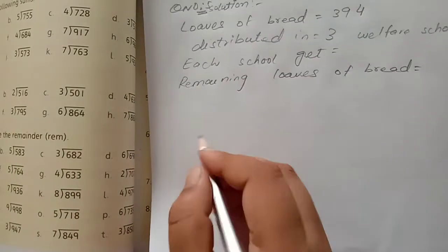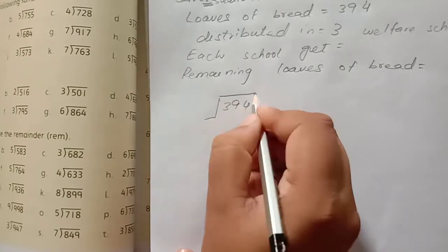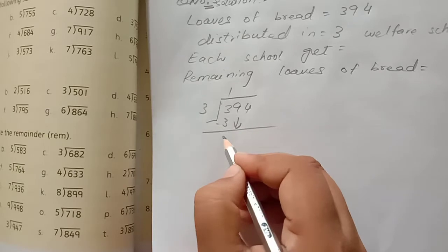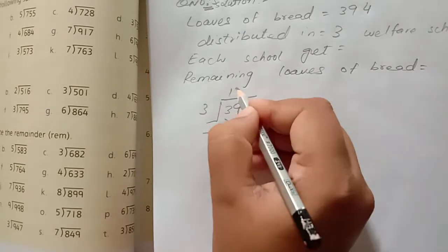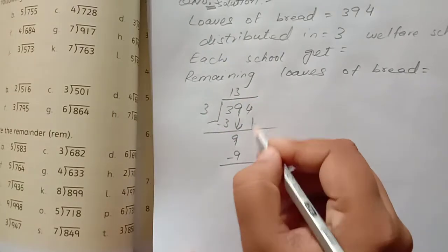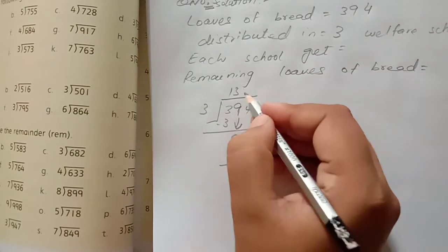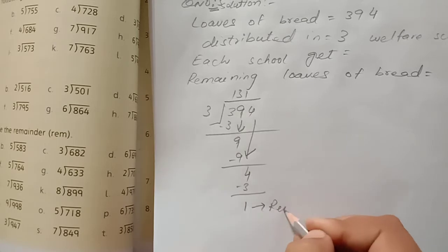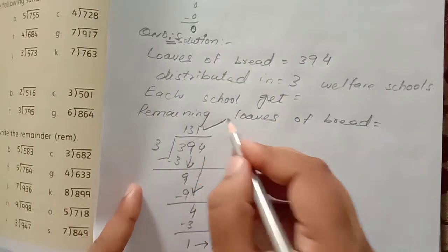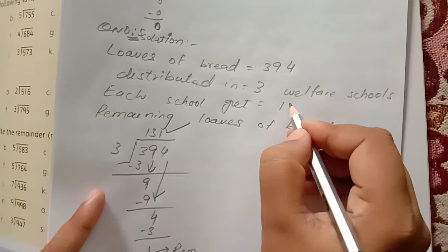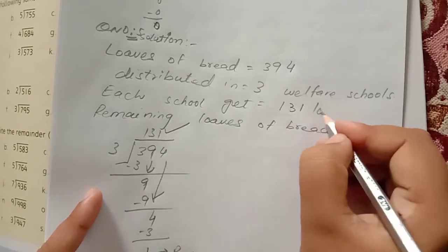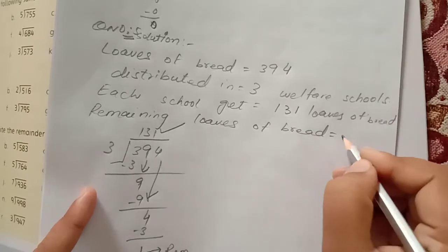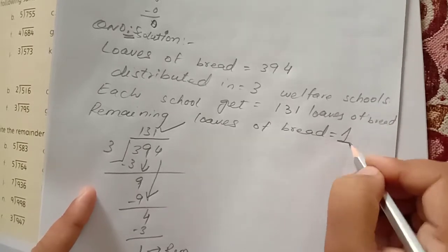How we will know? We will divide. 394 divided by 3. 3 into 3 is 1, minus 3, 0. 3 into 9 is 3, minus 9, 0. 3 into 4 is 1, minus 3, 1. We have remainder. Each school will get 131 loaves of bread. Remaining is 1.